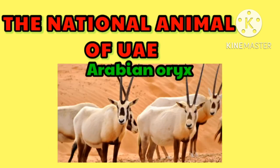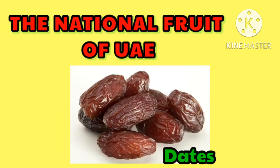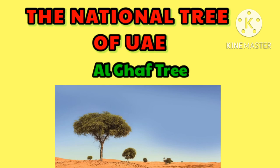The Arabian Oryx is the national animal of the UAE. The national fruit of the UAE is the date, which grows in abundance in the region and is used in various Emirati dishes. The national tree of the UAE is the Ghaf tree, also known as Prosopis cineraria, which has been used as an inspiration for the logo of the Year of Tolerance initiative.